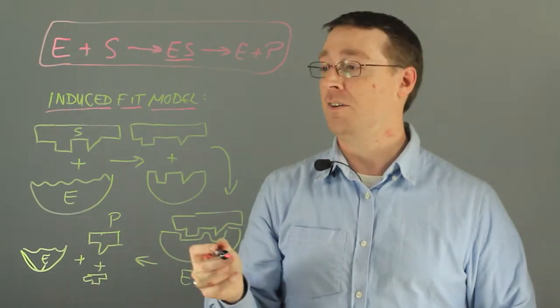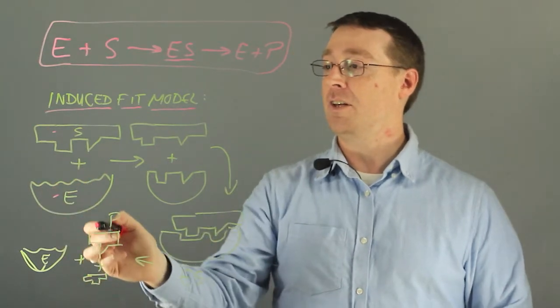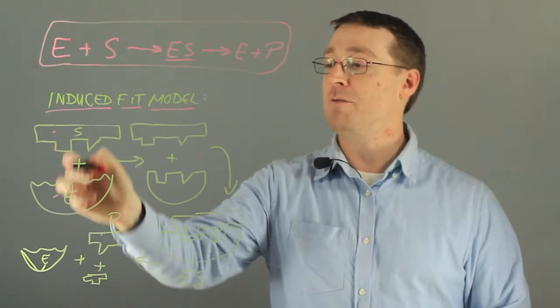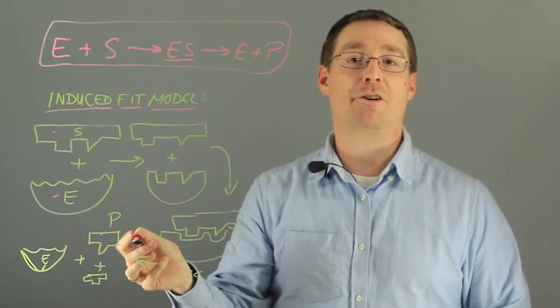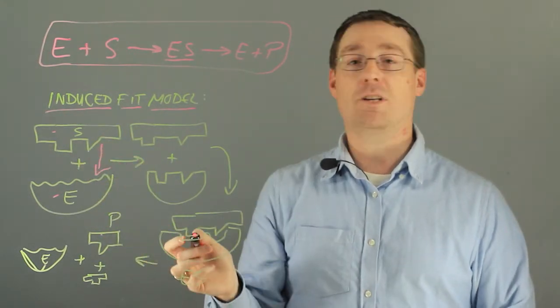If we have a substrate and an enzyme shown here, we can see that the enzyme and substrate are not complementary in their shape. But as the substrate comes in closer contact to the enzyme, the enzyme shape will conform or change to that of the substrate.